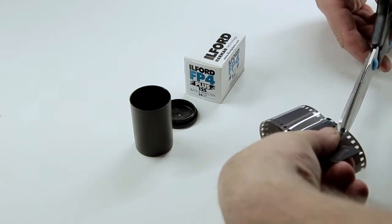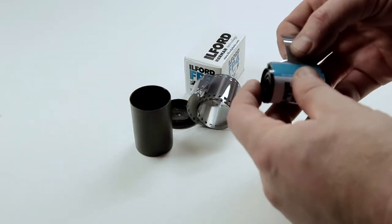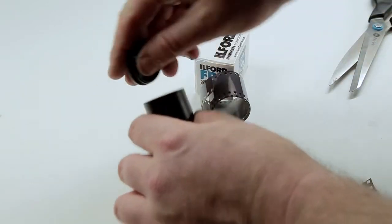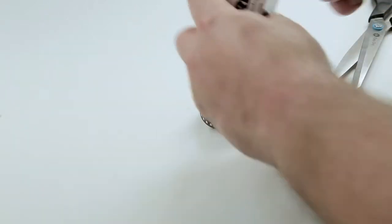Before I put it in the canister, I need to cut a little feeder for myself, put it back in the canister, put it to one side, and then put it in my camera later on to shoot some photographs with it.